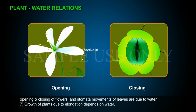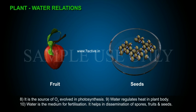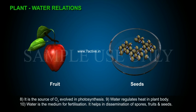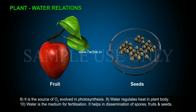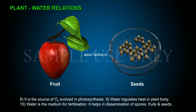Seventh, growth of plants due to elongation depends on water. Eighth, water is a source of O₂ evolved in photosynthesis. Ninth, water regulates heat in the plant body. Tenth, water is a medium for fertilization.